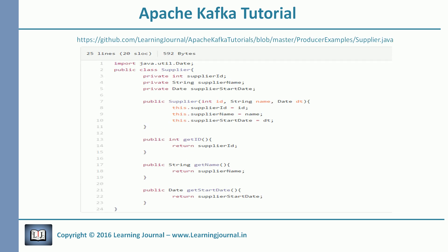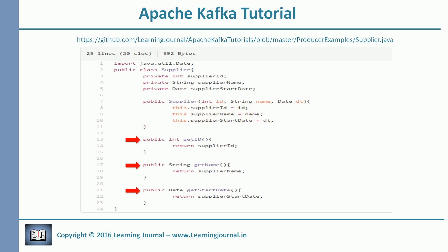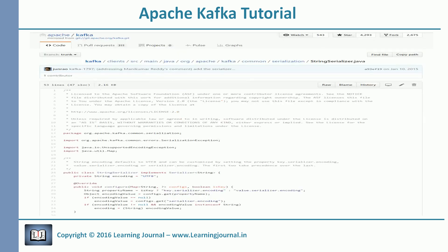The first thing is the supplier class. Let's look at the code. The supplier class defines three variables: supplier ID, supplier name, and supplier date. We have one constructor and three methods in this class. We will use this supplier class to instantiate a supplier object and send it as a Kafka message. The constructor takes three parameters and initializes the three variables. The three methods are to get the values for the corresponding variable.